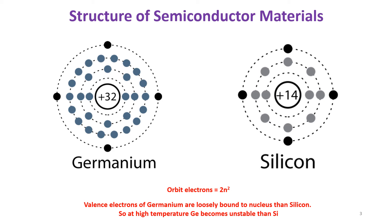If you take the valence electrons of silicon and compare silicon and germanium — the valence electrons of silicon are located in the third shell, whereas for germanium they are located in the fourth shell. By comparing these two, we can observe that the valence electrons of germanium are more loosely bound to the nucleus than silicon's, because germanium's valence electrons are on the fourth orbit and silicon's are on the third orbit.